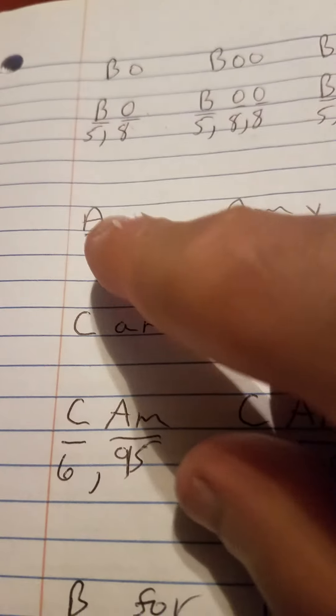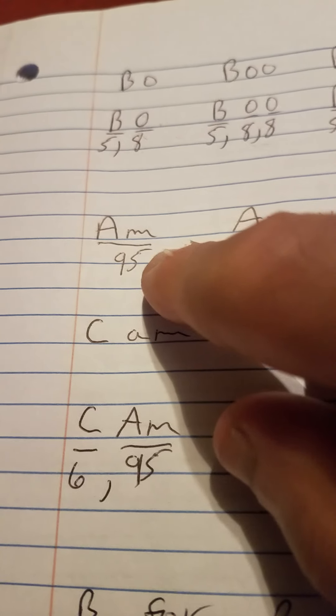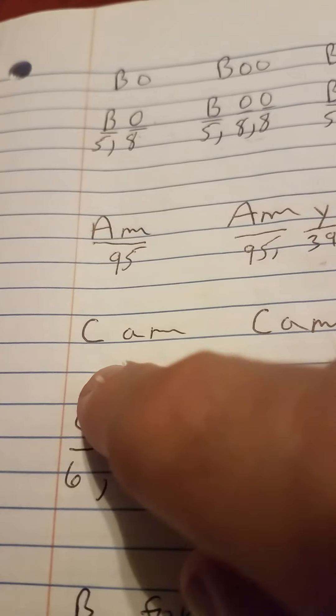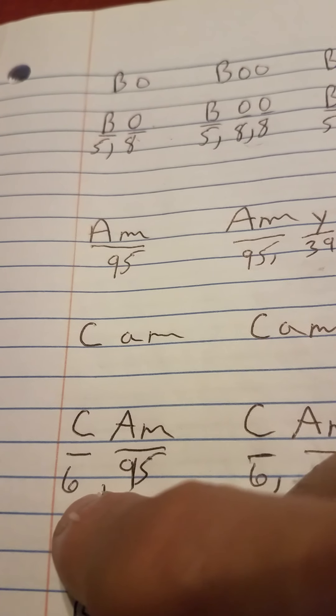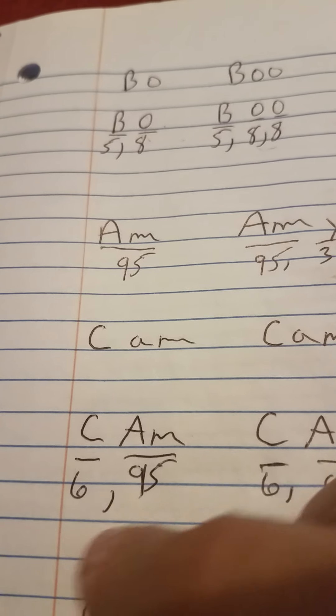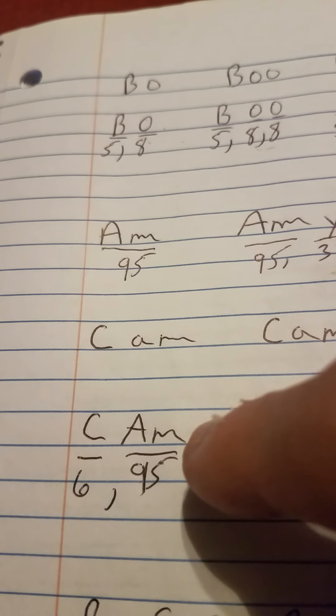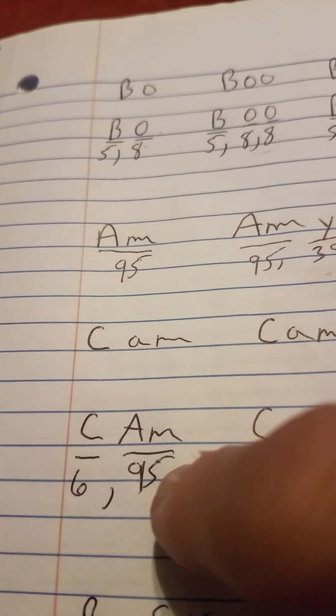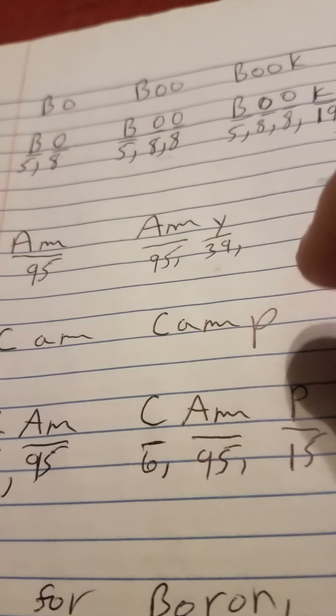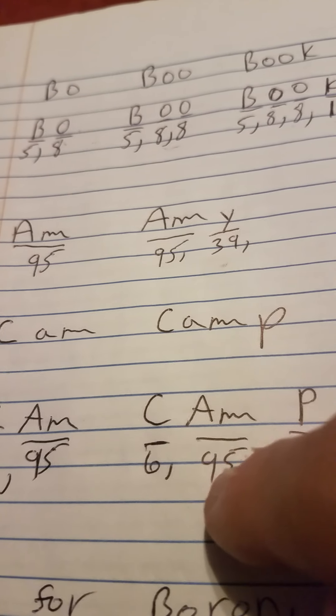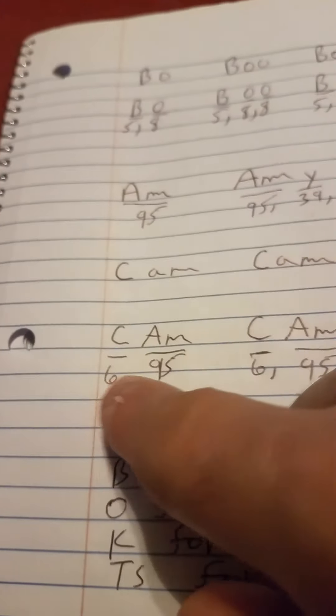Then I got the AM from Americium, which is 95. And I put a C in front of that and a six underneath the C for atomic number six. And I got carbon and I got the word cam, capital C, capital A, and small M. And I got six and I got 95.